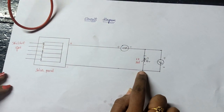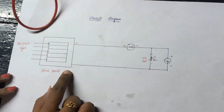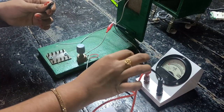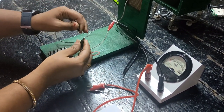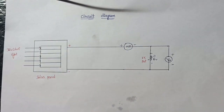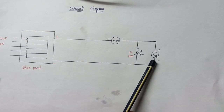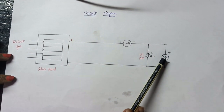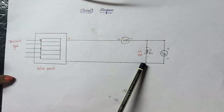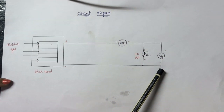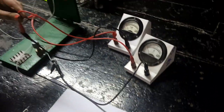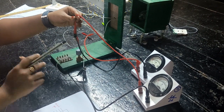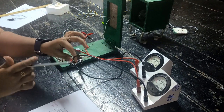The negative terminal of the load resistor is connected to the negative terminal of the solar panel. We are also introducing a voltmeter connected in parallel to the circuit. The positive terminal of the load resistance is connected to the positive terminal of the voltmeter, and the negative terminal of the load resistance is connected to the negative terminal of the voltmeter. All connections are now done.